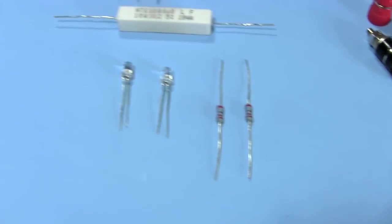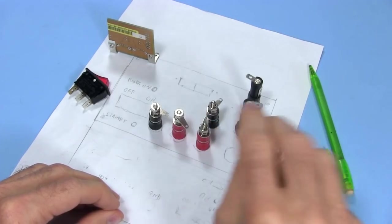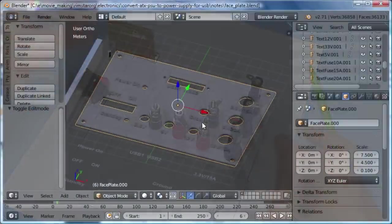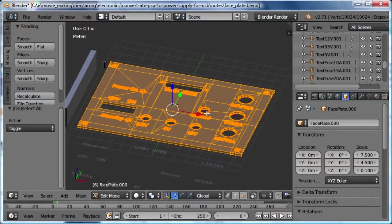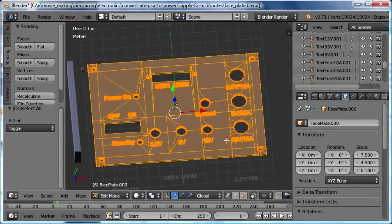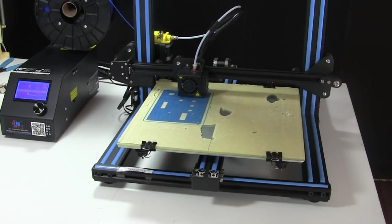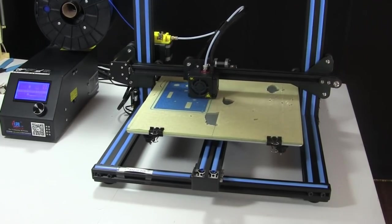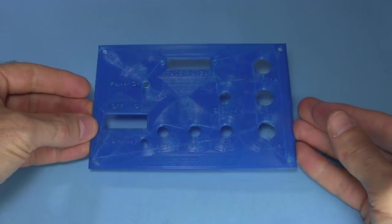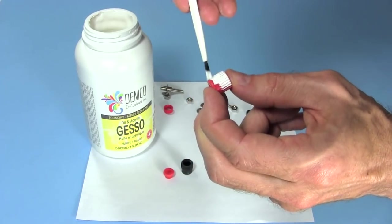They all came from local electronics and hardware stores. I start laying out the front panel on paper and then I draw it out in Blender, a free 3D modeling and animation software I use a lot. Next comes 3D printing it on my CR10 3D printer. And here's the printed panel.